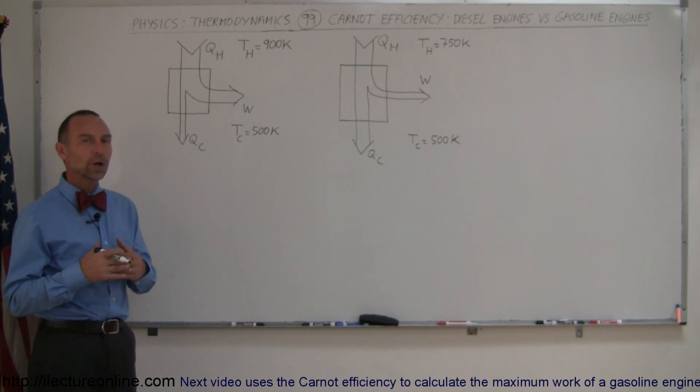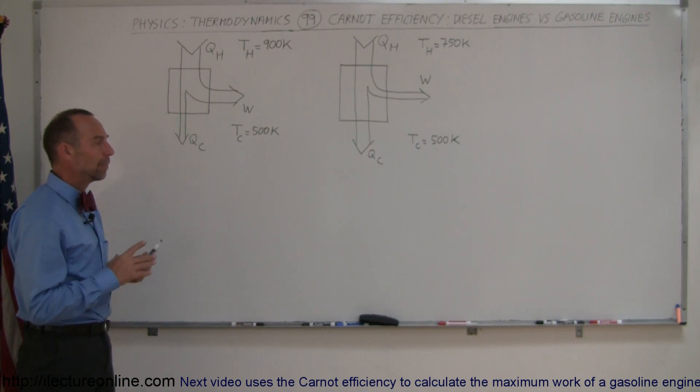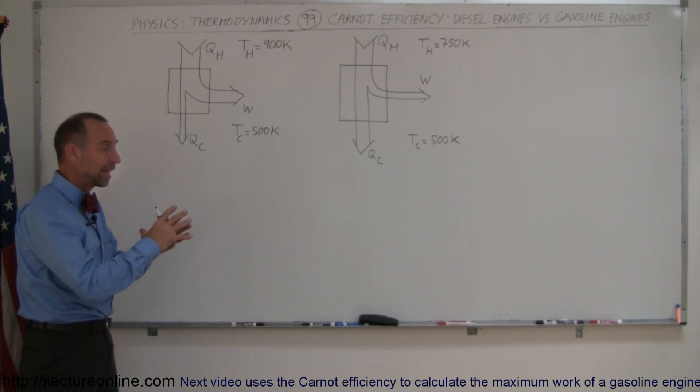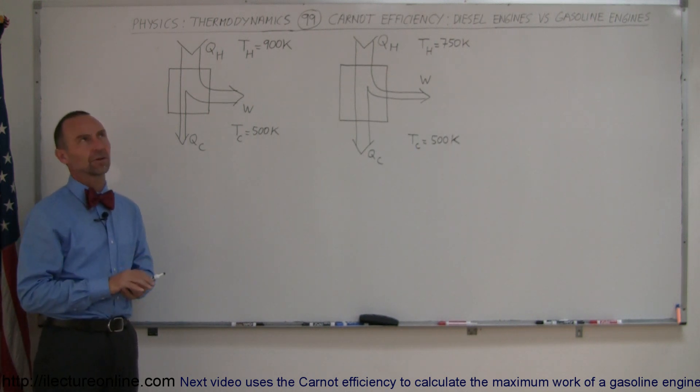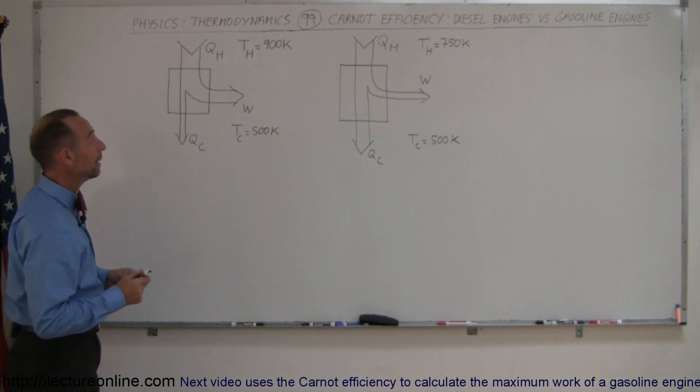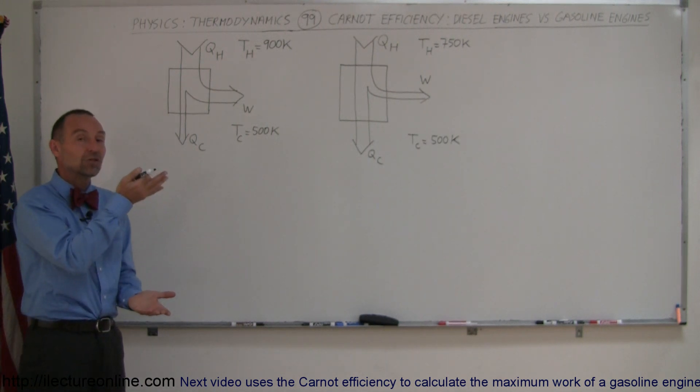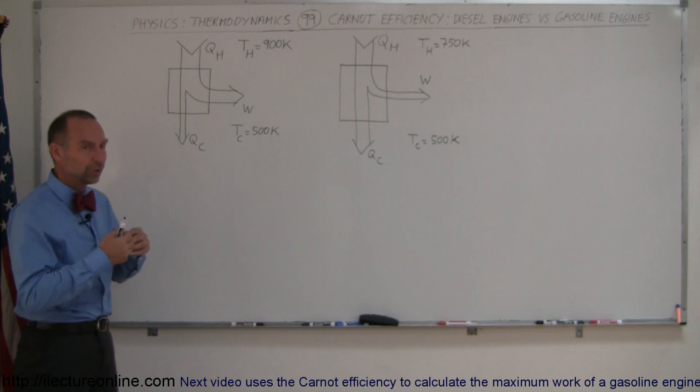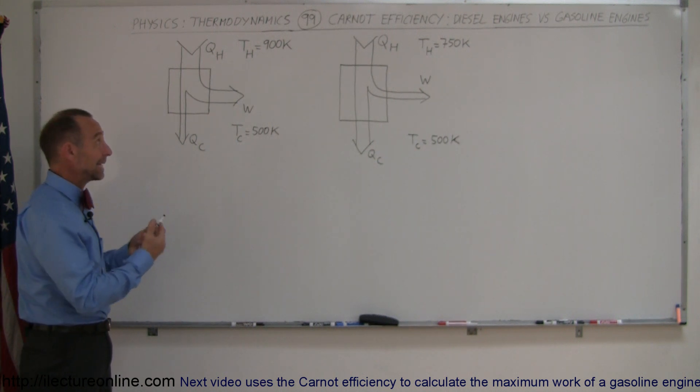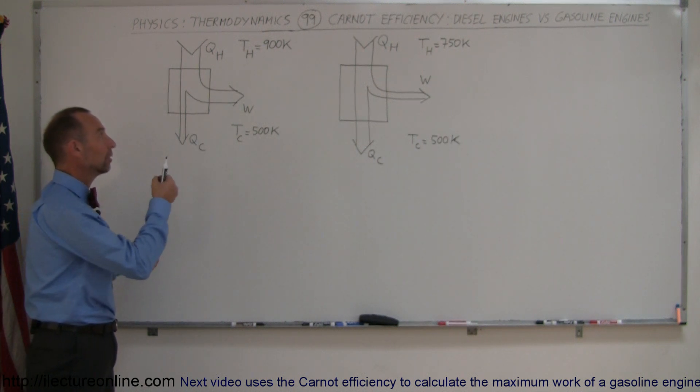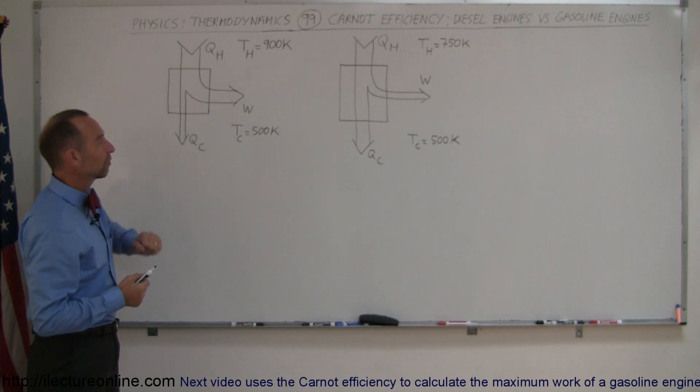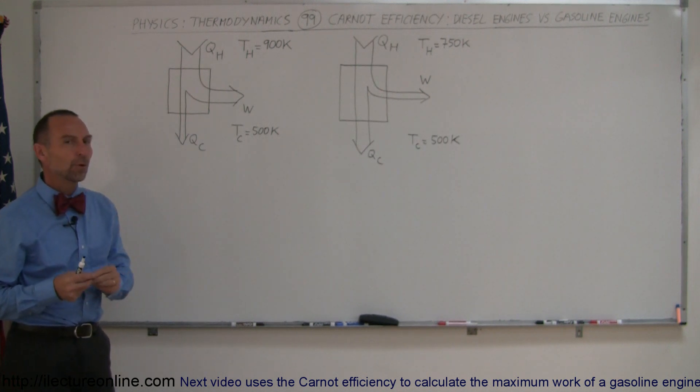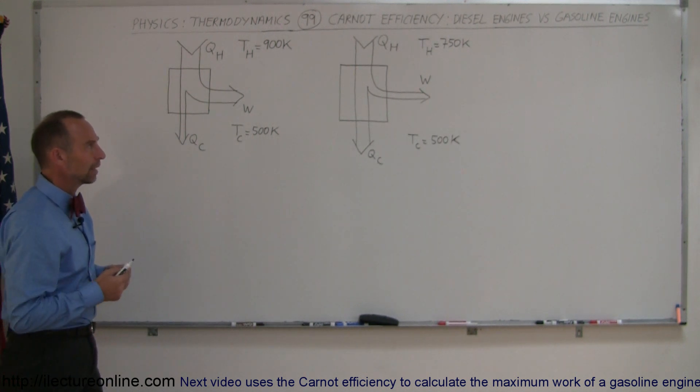Diesel engines run hotter. They have a greater compression ratio as they compress the gas to a smaller amount. The temperature of the gas reaches a much higher temperature than the injector fuel ignited. The fuel gets ignited simply by the heat of the gas, and so diesel engines operate at higher temperatures, at least at the hot reservoir, and therefore they become more efficient.